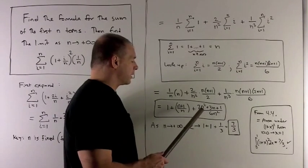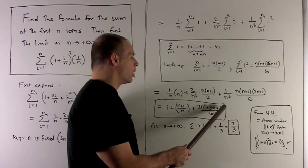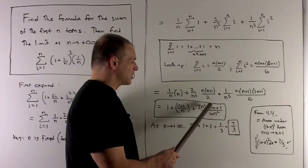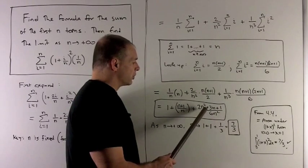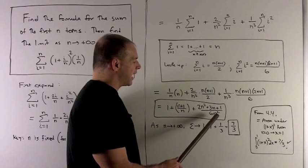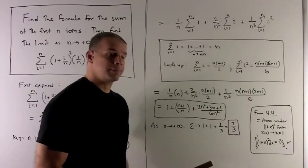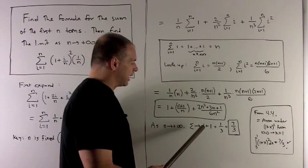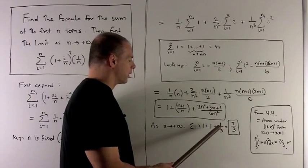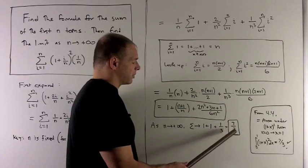For my third term, I can throw away the 3n plus 1, because I only need to keep the n squareds. So that limit's going to go to, the n squareds cancel, leaving me with a 2 over 6, or a 1/3. So when I take the limit, we're going to get 1 plus 1 plus 1/3, and that's going to leave me with 7/3.